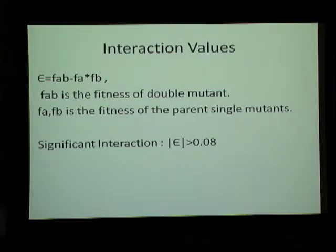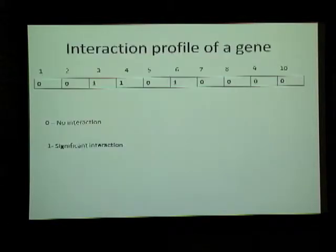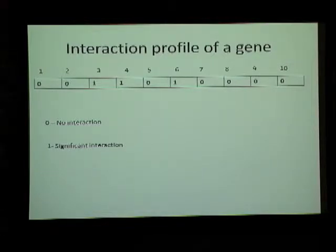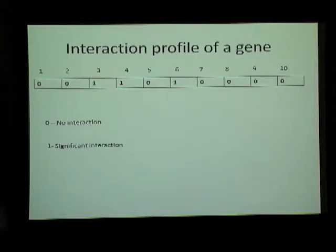If that interaction value is above the threshold, it's considered to be a significant interaction. These interaction values build up the interaction profile or feature vector for each gene. Let's say one gene interacted with ten other genes — for simplification I have shown a binary interaction profile. If there is an interaction between one gene and another, there will be a one; if there is no interaction, there will be a zero in the corresponding places.